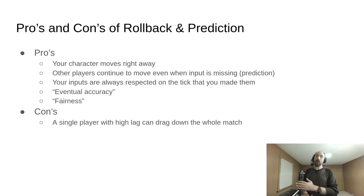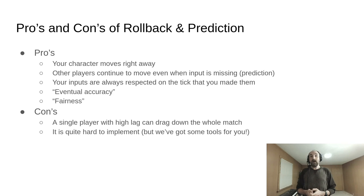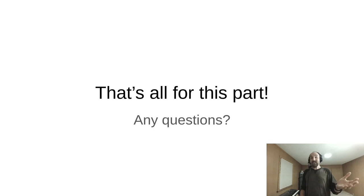It also has some cons. A single player with high lag can drag the whole match down. Other forms of network synchronization are more robust to this. There is some debate about how strong this effect is, but I have definitely seen it. It is real and one of the primary cons. The biggest con is that it is quite hard to implement rollback and prediction. It's one of the hardest forms of network synchronization to implement correctly. Of course, we have the Godot rollback netcode add-on, but I don't think there is any world where implementing rollback and prediction becomes easy. All we can do is make it easier.